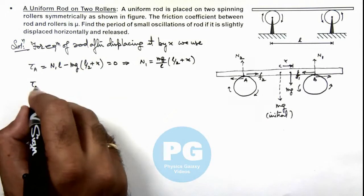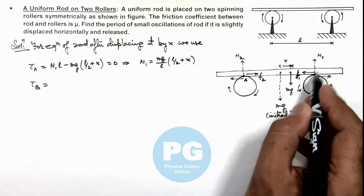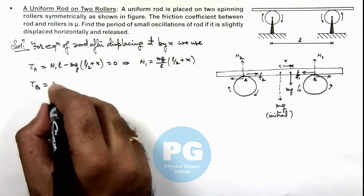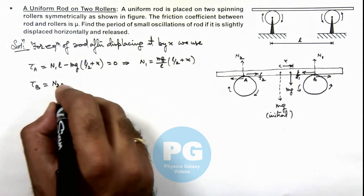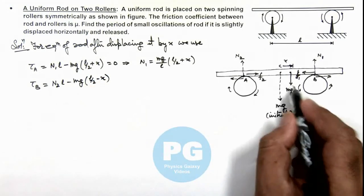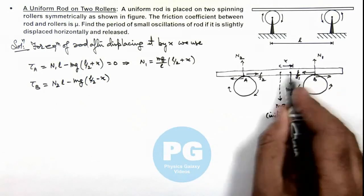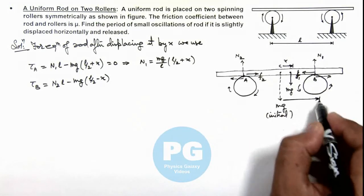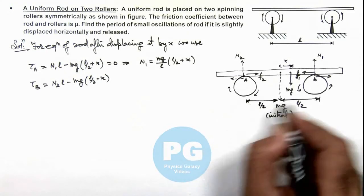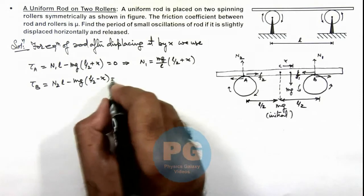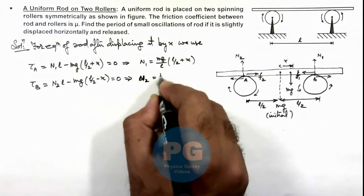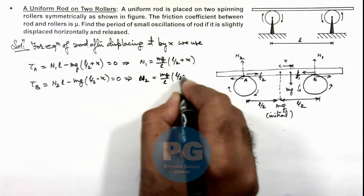Similarly we can write the torque about point B, where the torque due to N₁ becomes zero and it is only due to N₂ and its weight. So we can write it as N₂L minus mg multiplied by (L/2 - x). This distance is L/2, this is also L/2, as initially the weight would be acting at its midpoint. This should also be zero, which gives us the value of N₂, that is (mg/L) multiplied by (L/2 - x).